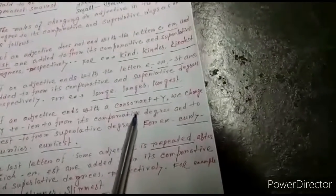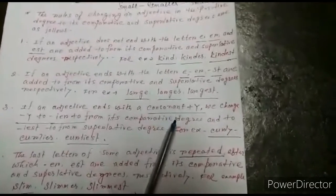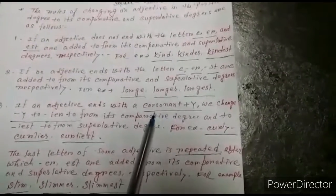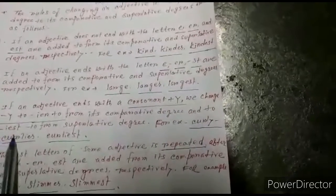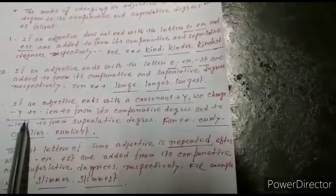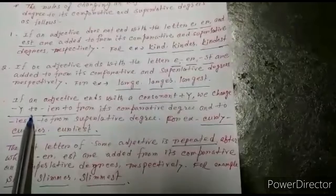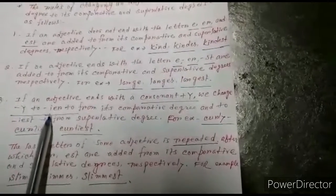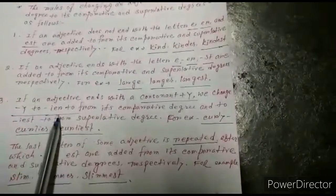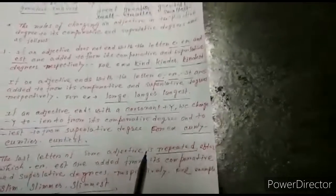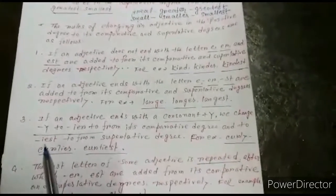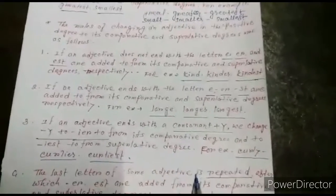Number 3: If an adjective ends with a consonant plus Y, we change Y to I, then add ER to form the comparative degree, and add EST to form the superlative degree.